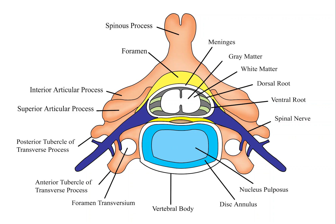This is the anatomy of the spine. The vertebral column, also known as the backbone or spine, is the core part of the axial skeleton in vertebrate animals and humans.